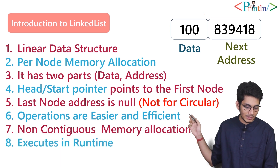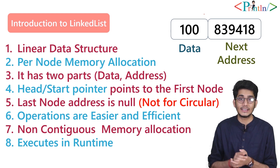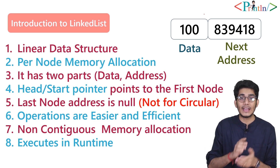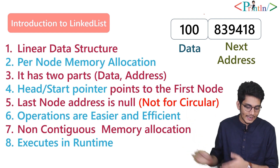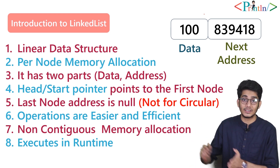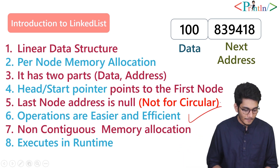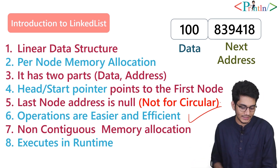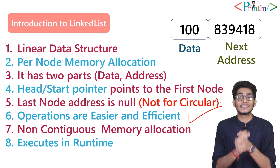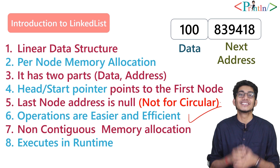To recap: linked list is a linear data structure with per-node memory allocation. Every node has two parts — data and address. It has a head pointer to access all nodes. The last node's address is null as the termination point. Operations are easier and efficient. It uses non-contiguous memory and executes at runtime. In the next video we'll code a linked list and create our first node.